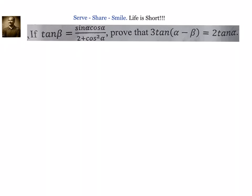Now, what we need to prove — let us write down first. We need to prove that 3 into tan of α minus β equals 2 tan α, or we can write tan of α minus β divided by tan α equals 2 by 3. This is what we need to prove.